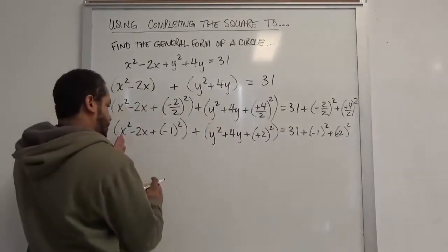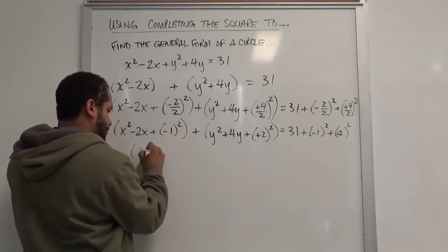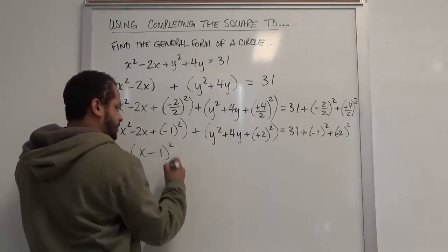To complete the square, we take this term and this term and we remove them from both sides. So we just get the x, we get the negative 1, and we square it.